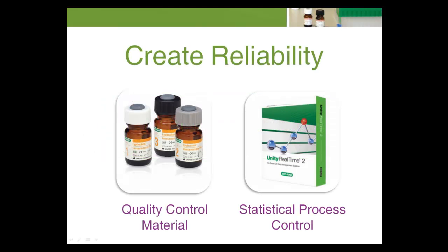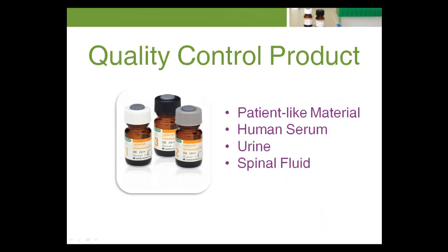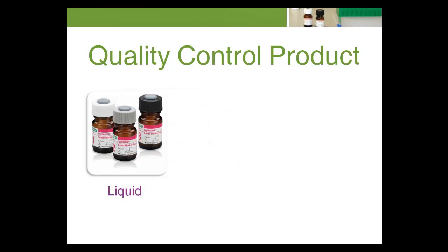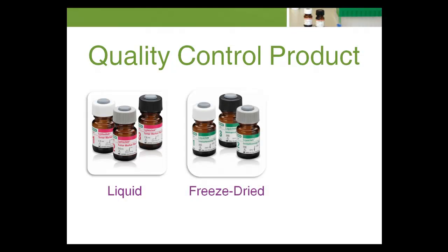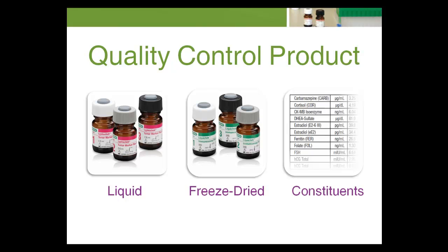The question of reliability for most testing can be resolved by regular use of quality control materials and statistical process control. A quality control product is a patient-like material, ideally made from human serum, urine, or spinal fluid. A control product can be a liquid or freeze-dried (lyophilized) material, and is composed of one or more constituents — analytes of known concentration.